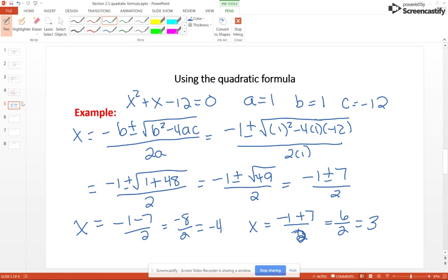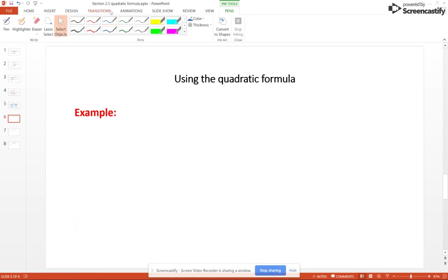Now let's look at an example that has a coefficient of x squared that is not just 1. Let's do 3x squared minus 5x minus 2 equals 0.